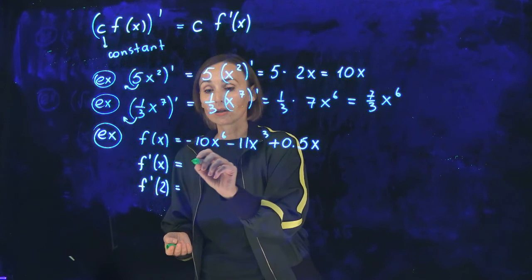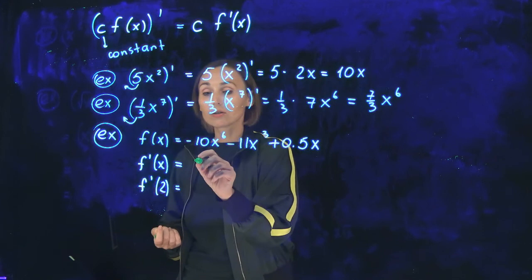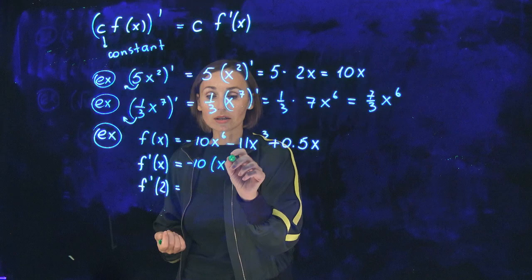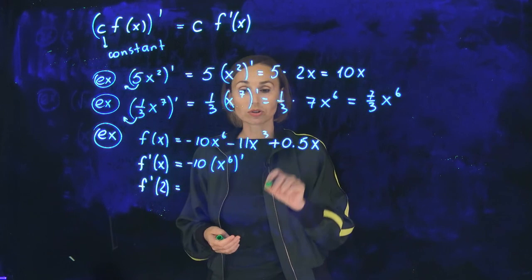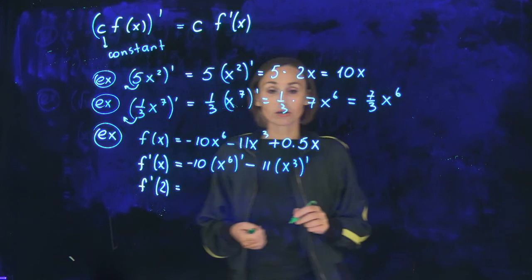So derivative of negative 10x to the power 6 minus 11x cubed plus 0.5x will be derivative of negative 10x to the 6. So you differentiate only x to the 6 and put negative 10 outside. Then derivative of negative 11x cubed, put negative 11 outside.